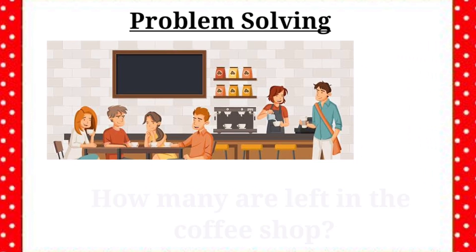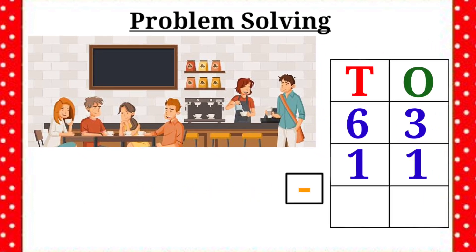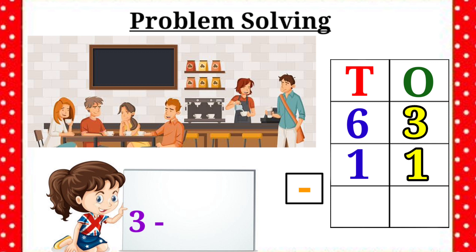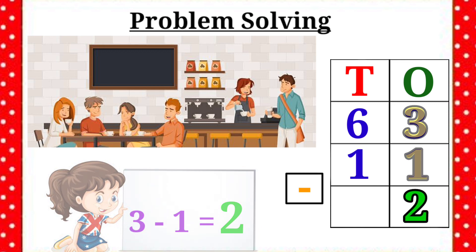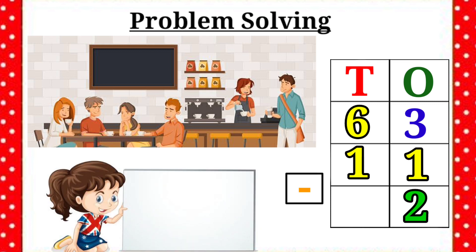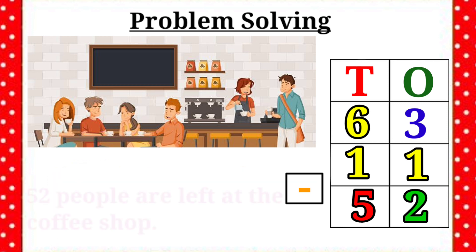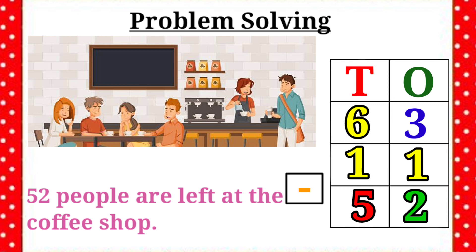Now we are going to write the correct sign and given numbers. Then subtract the 1's place first. 3 minus 1 is equal to 2. Let's write the number 2 in the 1's place. Then subtract the 10's place. 6 minus 1 is equal to 5. Let's write the number 5 in the 10's place. Therefore, the answer is 52 people are left at the coffee shop.